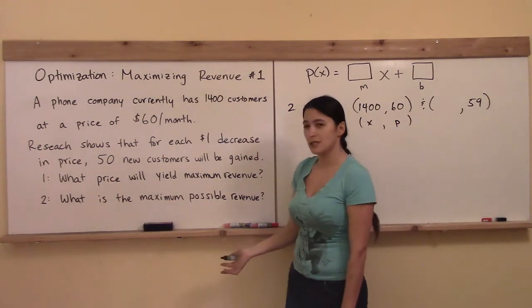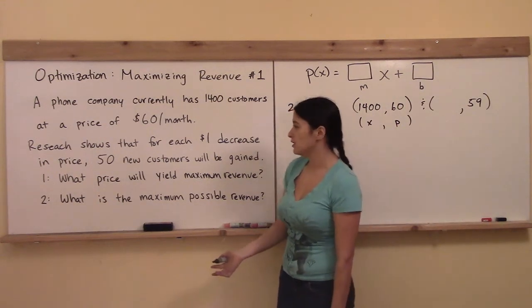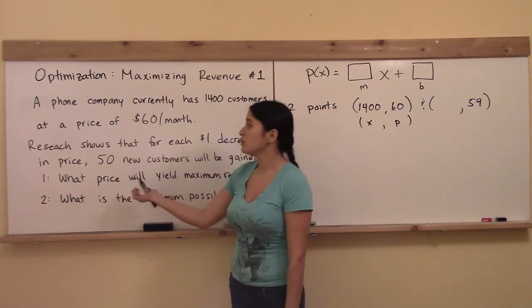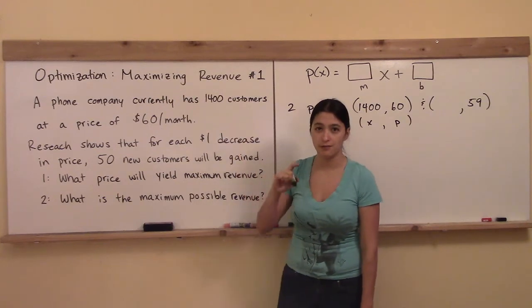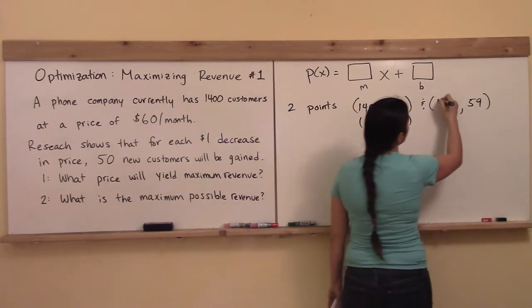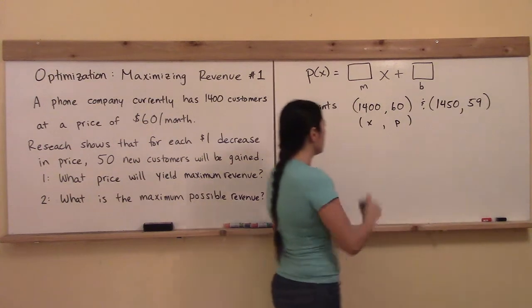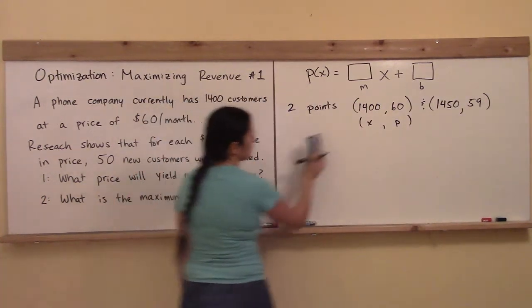And what did it say was going to happen when it goes down by $1? You're going to get 50 new customers, right? So how many customers will you have then? 1,450. Exactly. That's how we get the new point.